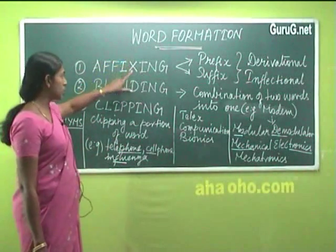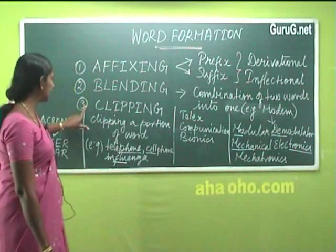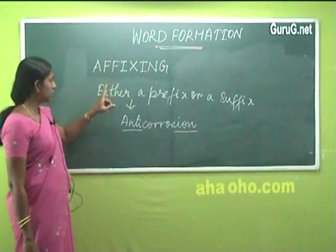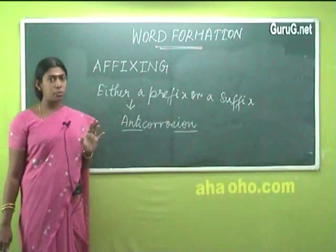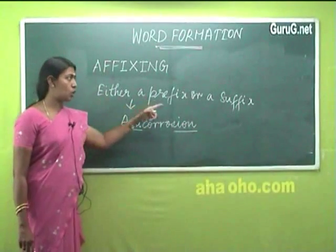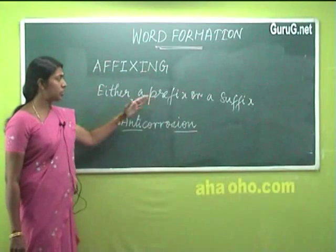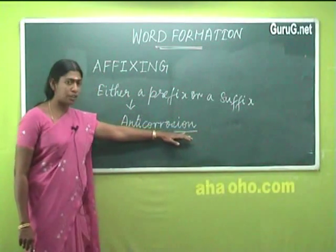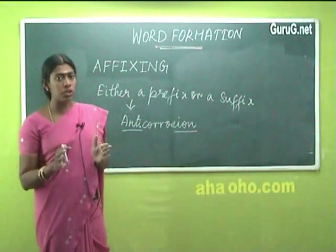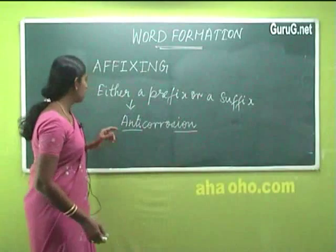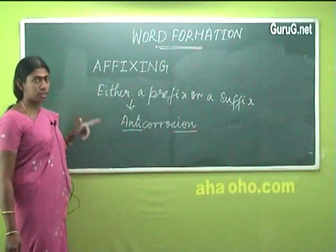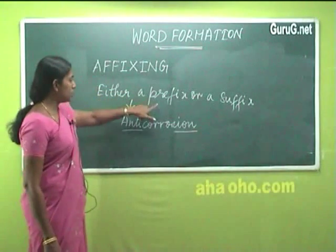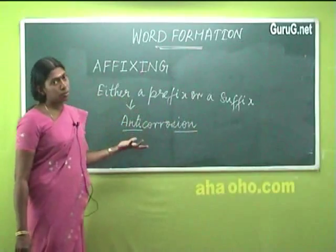Word formation can be done through four processes: one, affixing; two, blending; three, clipping; and four, acronyms. Now we will study affixing in detail. An affix is nothing but either a prefix or a suffix. A prefix is the phonemes added at the beginning of a root, and a suffix is generally added at the end of the root word.